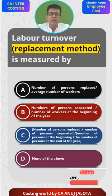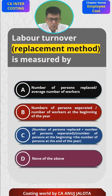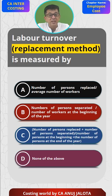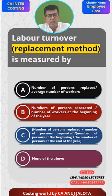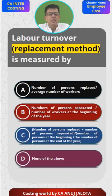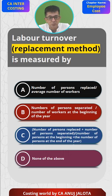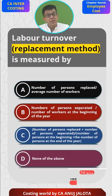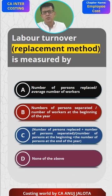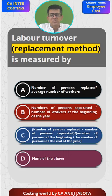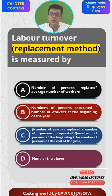You all have done labor turnover under three methods: replacement method, separation method, and flux method. First, what do you mean by labor turnover? It is the rate of change of labor workforce during a certain period. No company can say no worker has ever left — workers will leave for better prospects or other reasons. Under the separation method, labor turnover is calculated as number of workers separated divided by average number of workers, multiplied by 100. Average number of workers is calculated as workers at the beginning plus workers at the end, divided by two.